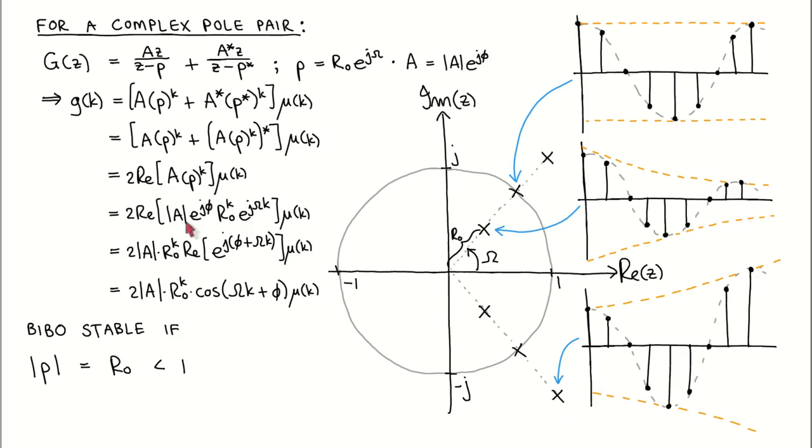After we separate the complex numbers into the magnitudes and angles and combine the angles, we get this line. Lastly, we use Euler's equation to write it as this sinusoidal signal.